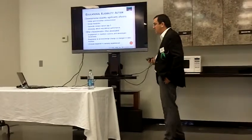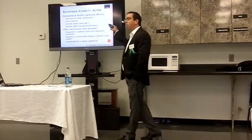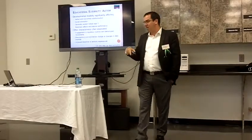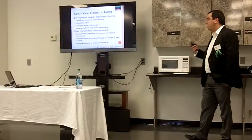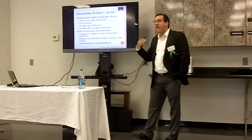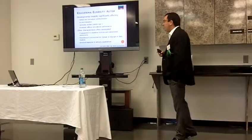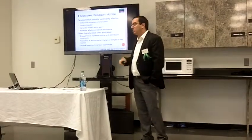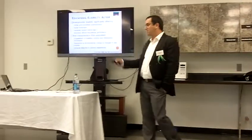Other characteristics they define are engagement in repetitive routines and stereotyped movements — you have to have both of those for an autism eligibility, whereas for a medical diagnosis you need one or the other. You need to have resistance to environmental changes or changes in daily routines, though you don't need that for a medical diagnosis. And you have to have an unusual response to sensory experiences, where the medical diagnosis has taken a lot of the sensory stuff out and made it more an associated feature, not a defining characteristic.